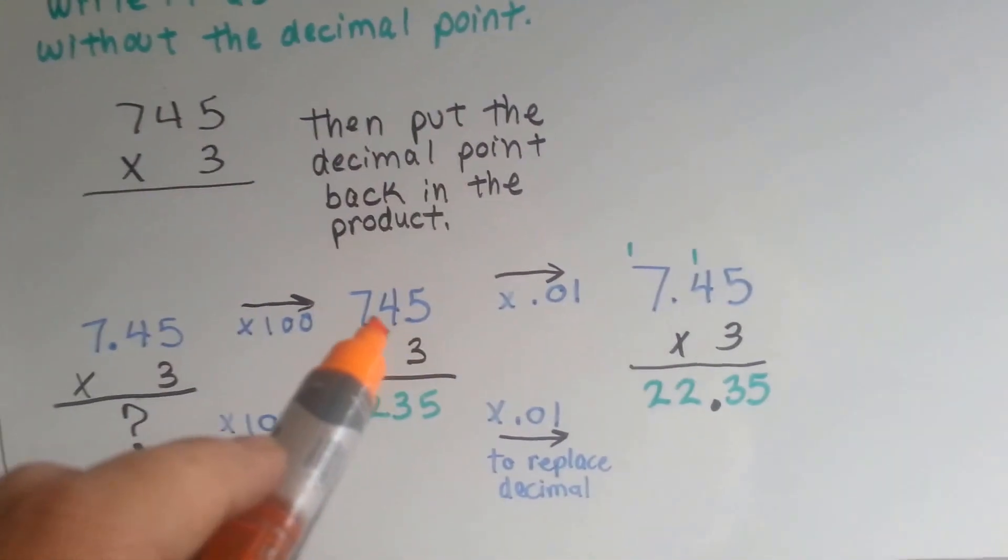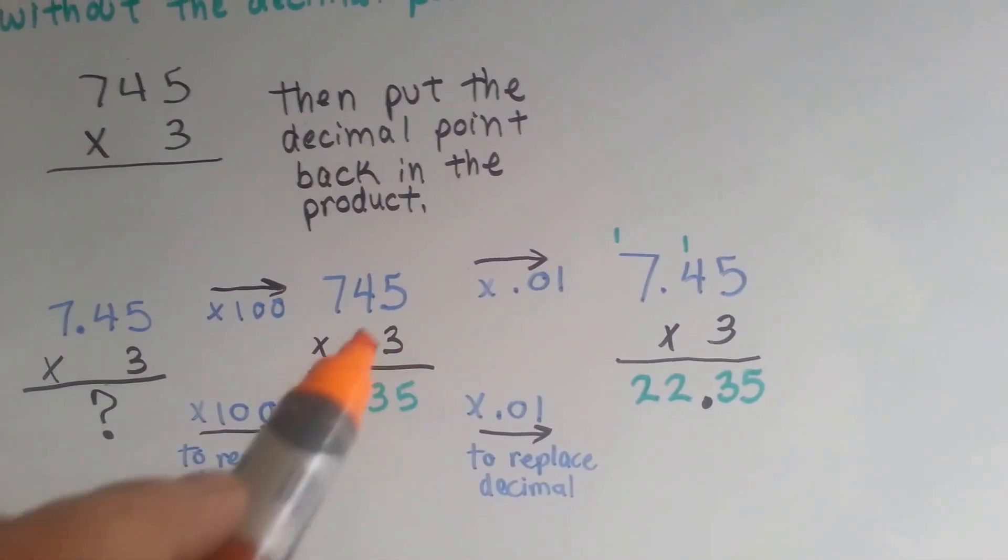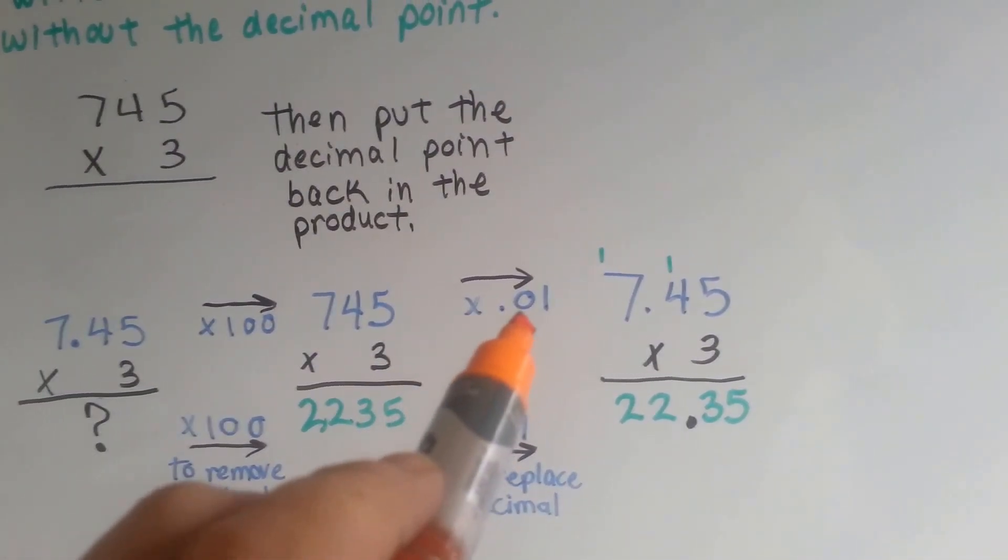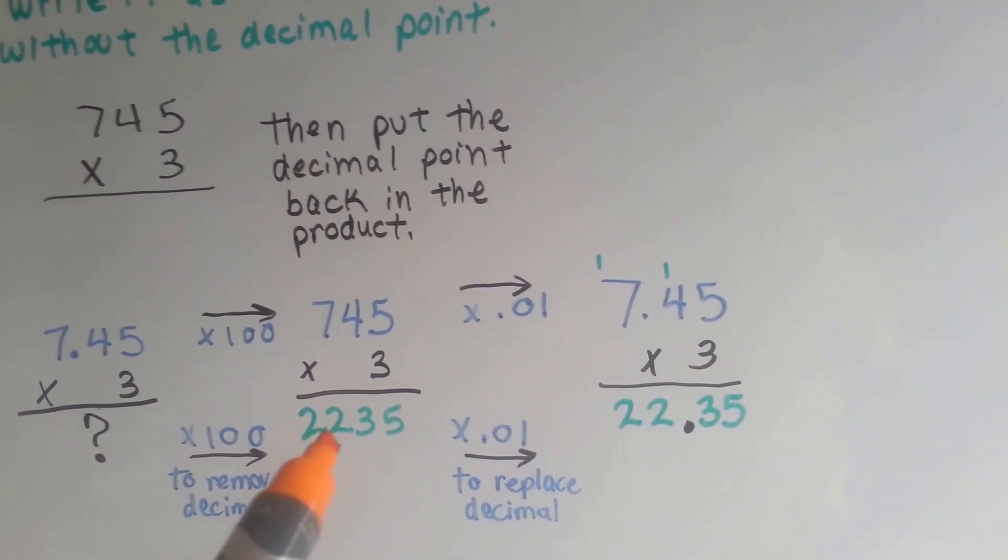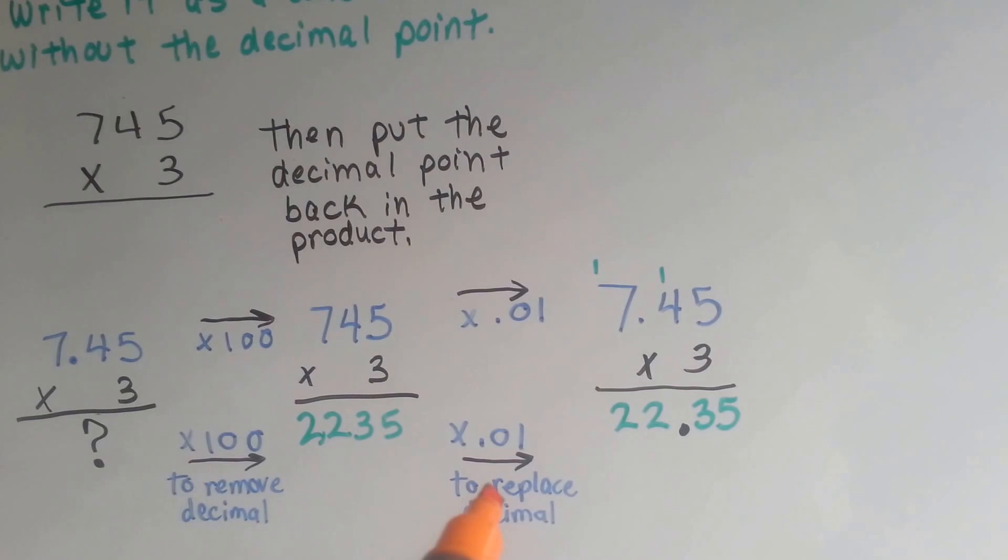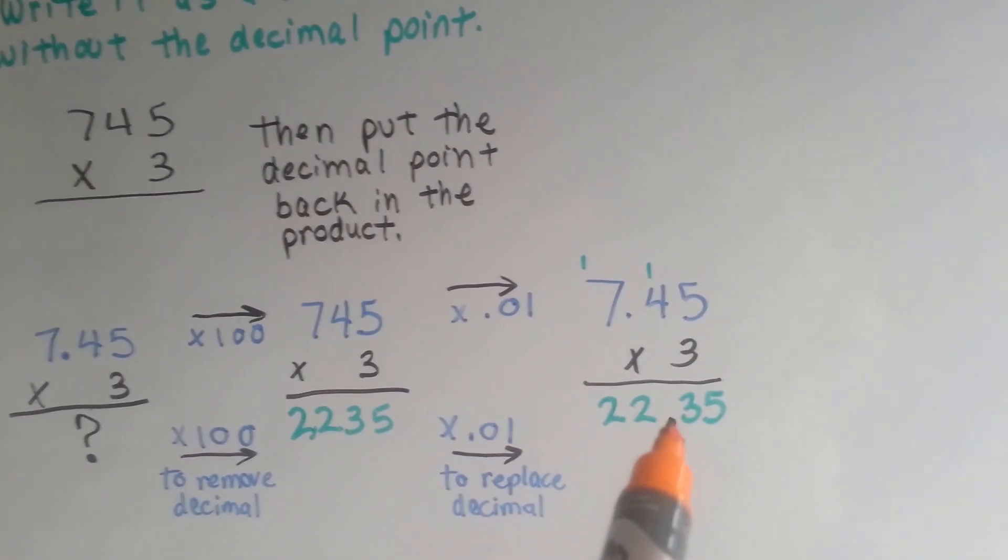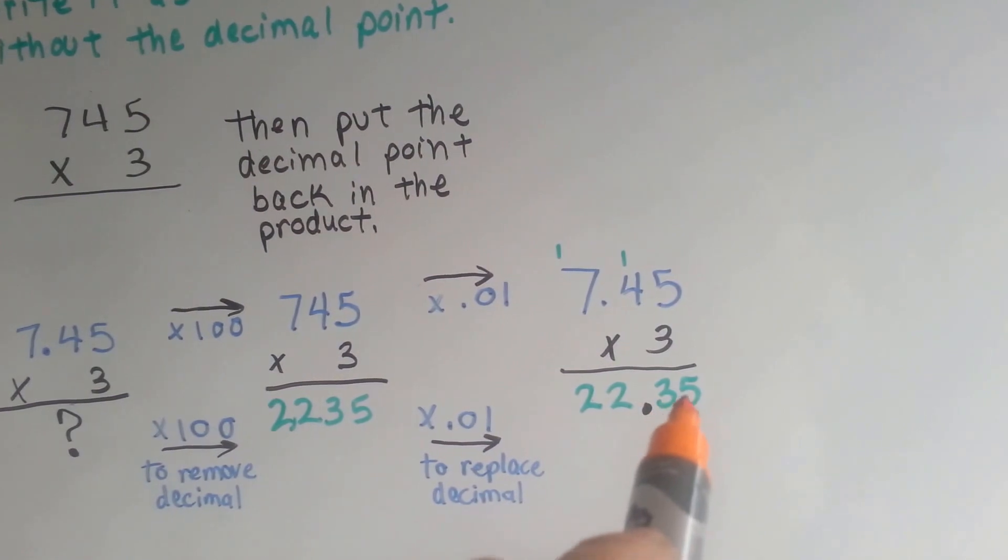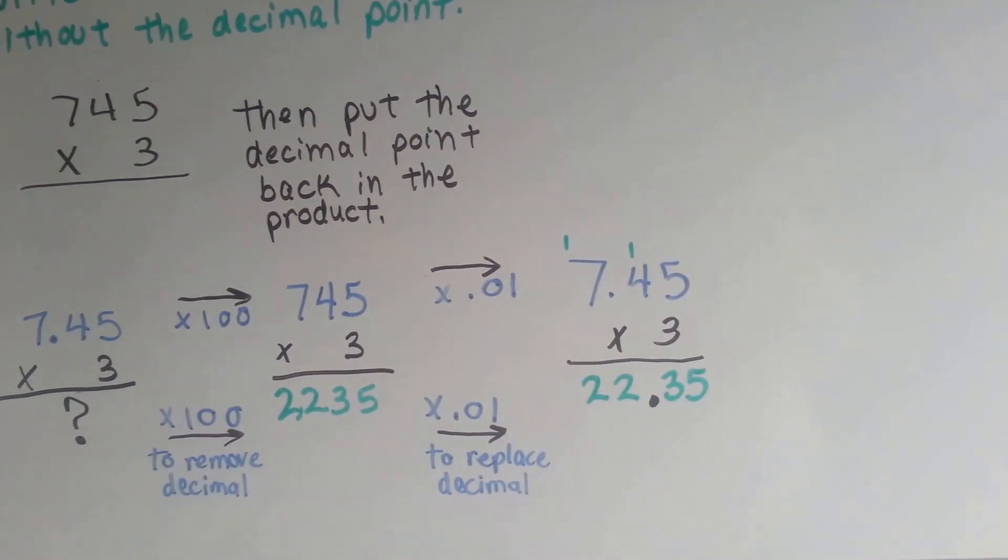To put the decimal place back, we would take this number and we would multiply it by one hundredth. So the 2235 multiplied by a hundredth would put it back, so there would be 35 hundredths, because we're multiplying by one hundredth, see? Take it away, put it back.